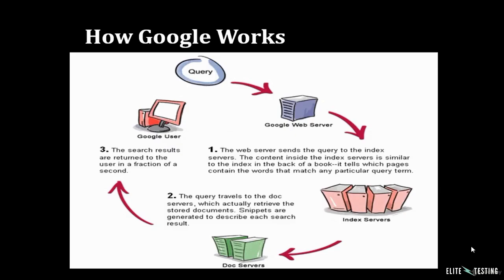An important point to consider is how Google works. When a user puts a query in the Google search engine, it first goes to the Google web server, which then sends the query to the index server. The content inside the index server is similar to the index at the back of a book — it tells which page contains words matching a particular query term. The query then travels to the doc server, which retrieves stored documents, and snippets are generated to describe each search result.